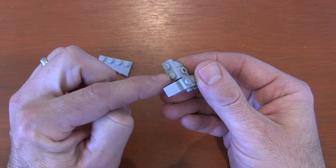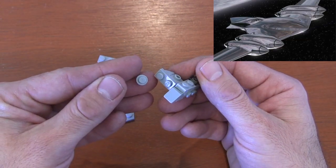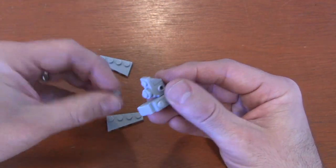With those two studs exposed, we'll create the large engines. Get two 1x1 round plates and put them on both studs.